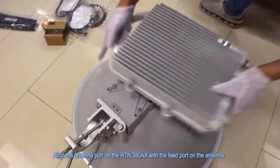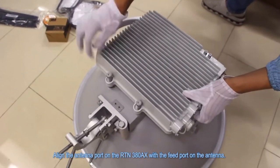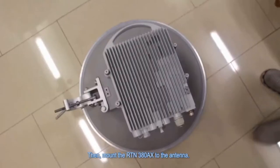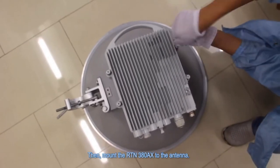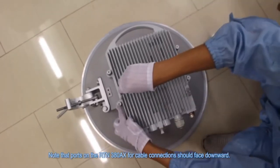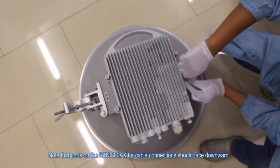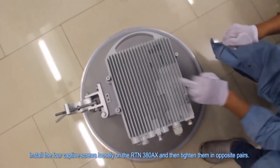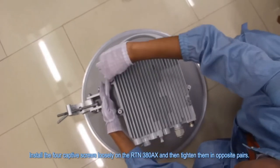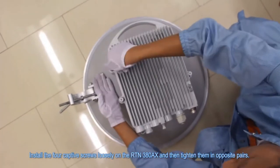Align the antenna port on the RTN380AX with the feed port on the antenna, then mount the RTN380AX to the antenna. Note that ports on the RTN380AX for cable connections should face downward. Install the four captive screws loosely on the RTN380AX and then tighten them in opposite pairs.